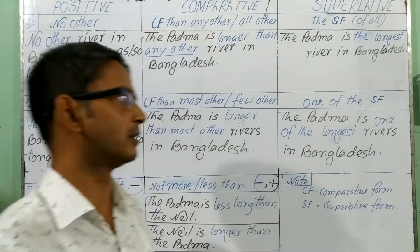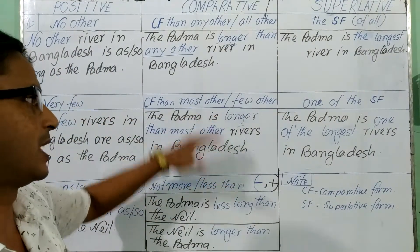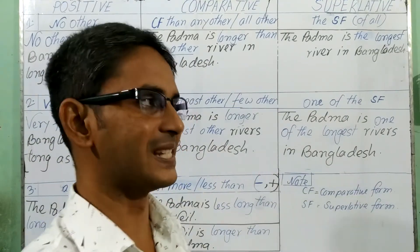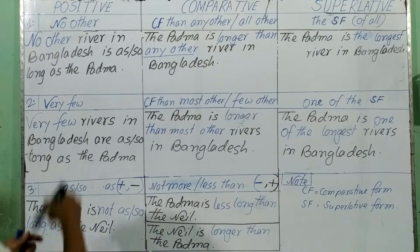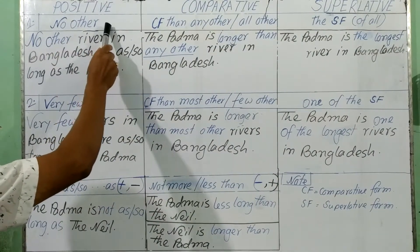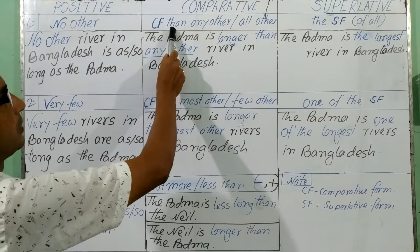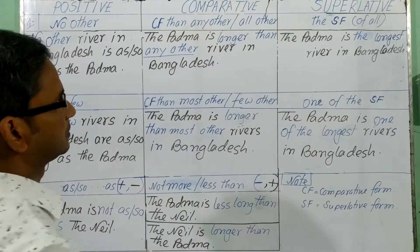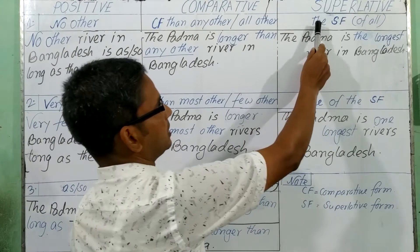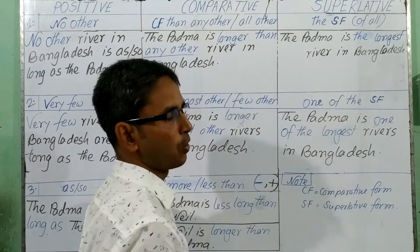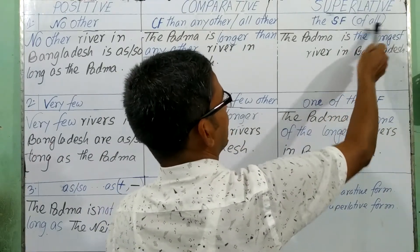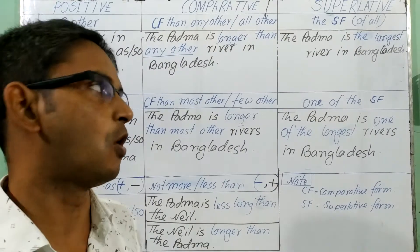I have given here three systems on how to change this comparison of degrees easily. You can see in number one: 'no other.' If you have 'no other' in a positive sentence, you will have to use the comparative form, then 'than any other' or 'all other' in the comparative sentence. For the superlative, you will have to use 'the' then the superlative form. I have given 'of all' in brackets because sometimes you have to use 'of all.'